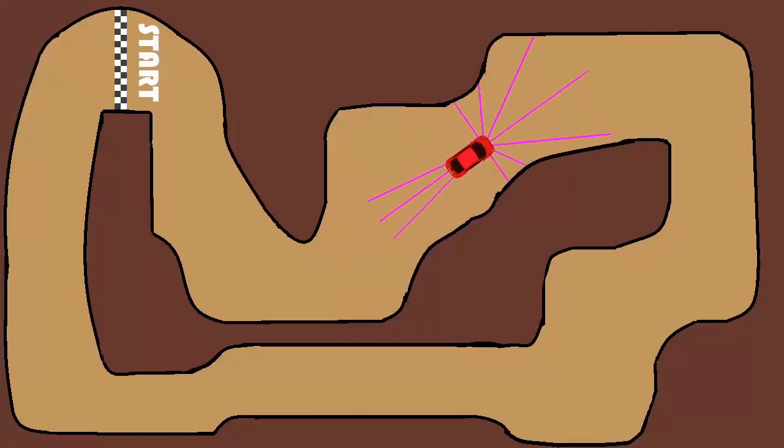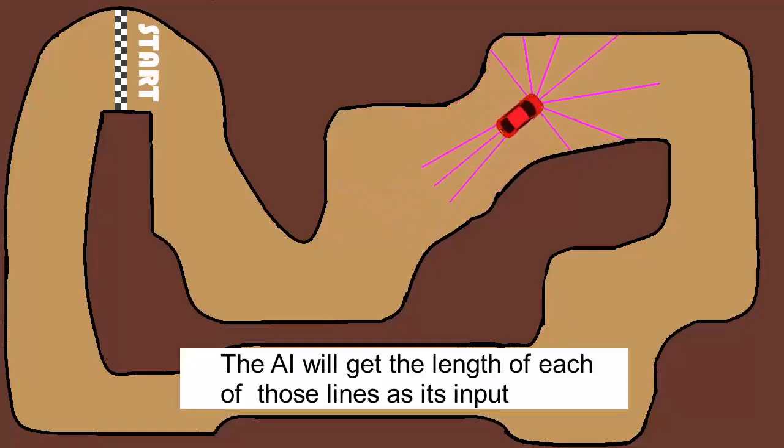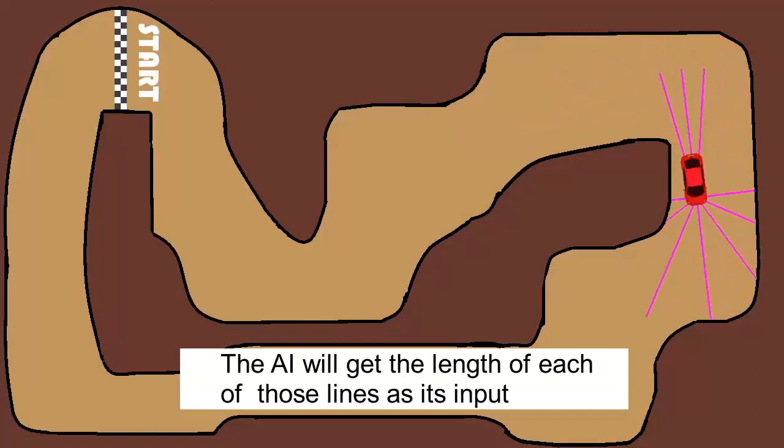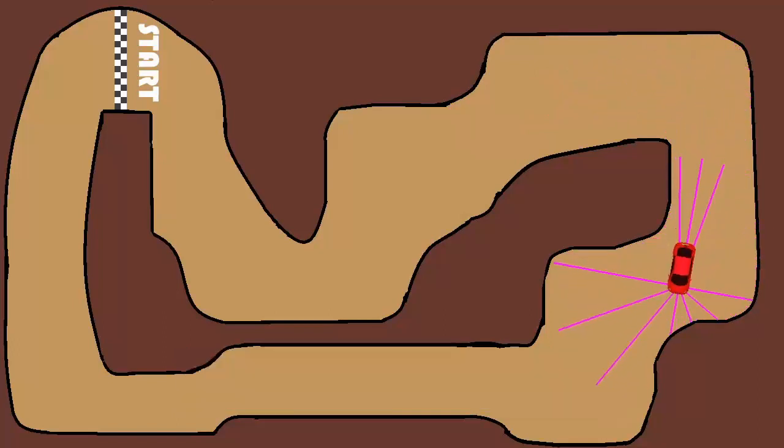When the AI drives it's going to get back the length of these lines, which it can then use to determine what it wants to do.